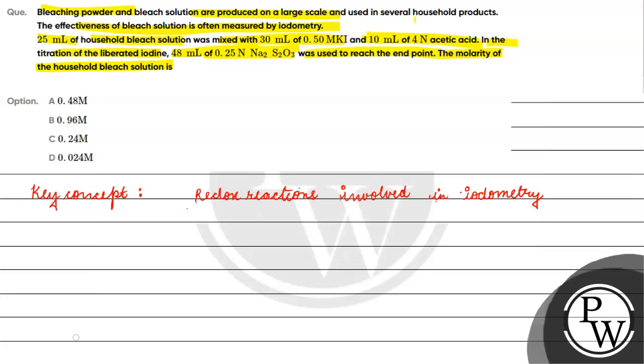The first thing we have to do is identify bleaching powder. What is bleaching powder? It is basically CaOCl2.